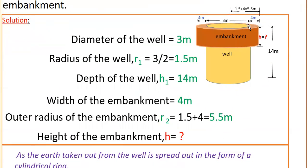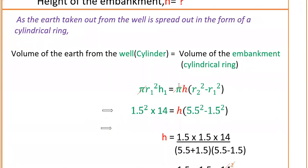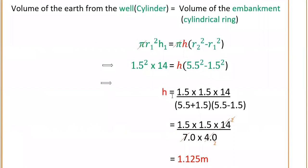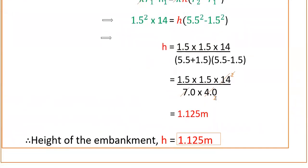Here r2 is the outer radius and r1 is the inner radius. Cancelling π from both sides: r1² into h1 equals h into (r2² minus r1²). Substituting: 1.5² into 14 equals h into (5.5² minus 1.5²). Using the identity a² minus b² equals (a+b)(a-b): h equals 1.5 × 1.5 × 14 divided by (5.5 + 1.5)(5.5 − 1.5), which is 7 × 4 = 28. Therefore h equals 1.5 × 1.5 × 14 / 28, equal to 1.125 meters. Therefore the height of the embankment h is equal to 1.125 meters.